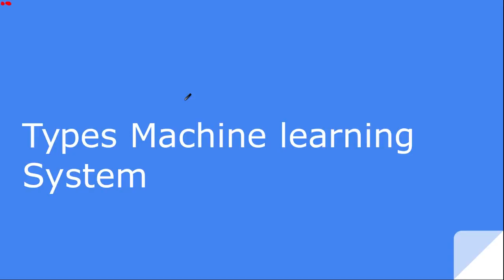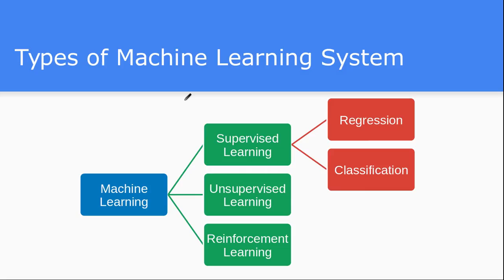Hello friends, this is the third video tutorial in the video lectures series on machine learning. What we have seen till now is what is machine learning and the basic building block diagram of machine learning — how, in a general way, the machine learning system works. In this tutorial we will see what are the different types of machine learning systems and how you can classify different algorithms of machine learning into different categories. So let's begin.